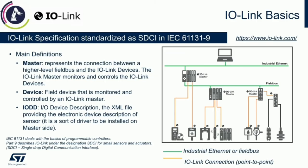Let's introduce a basic definition of what IO-Link actually is. IO-Link is a standard for industrial connectivity at a lower bitrate than industrial Ethernet, and it is used to connect the mainstream of data to the end nodes — usually industrial sensors in a factory automation environment.